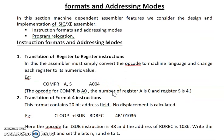The second type of translation is format 4 instructions. In SIC/XE there are four types of instructions: 1-byte instruction, 2-byte instruction, 3-byte instruction, and 4-byte instruction.